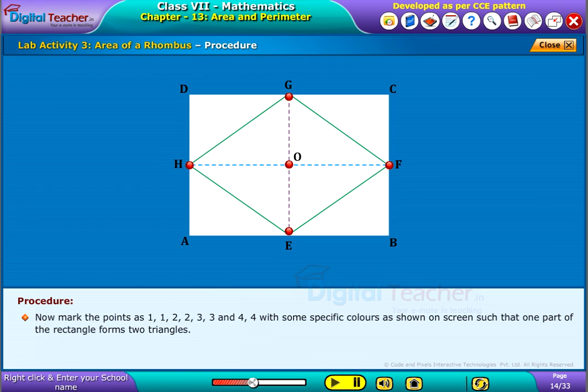Now mark the points as 1, 1, 2, 2, 3, 3 and 4, 4 with some specific colors as shown on screen such that one part of the rectangle forms two triangles.